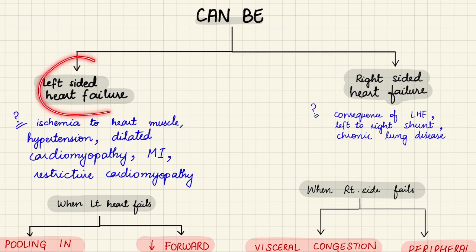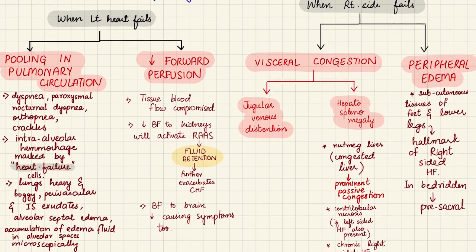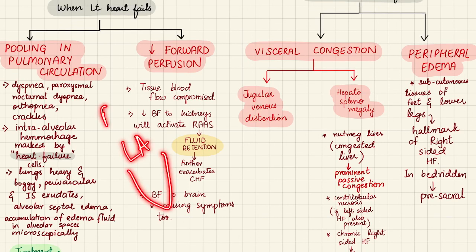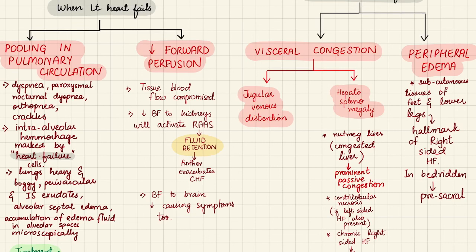Congestive cardiac failure is divided into left-sided and right-sided heart failure. Left-sided heart failure occurs due to ischemia, hypertension, dilated cardiomyopathy, MI, and restrictive cardiomyopathy. When the left side of the heart fails, there are two main problems: firstly, blood pools in the pulmonary circulation — the left ventricle, left atrium, and pulmonary circulation — causing blood and fluid to leak into the alveolar spaces and lung parenchyma.